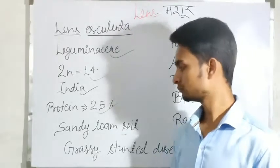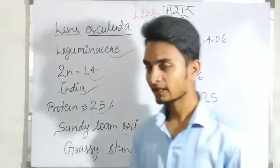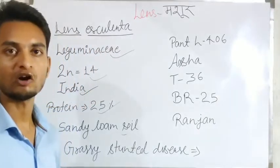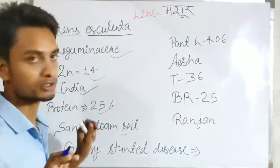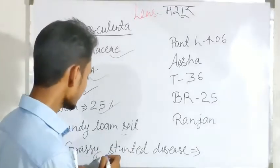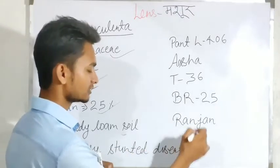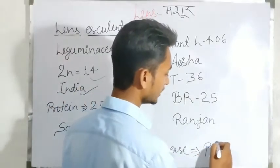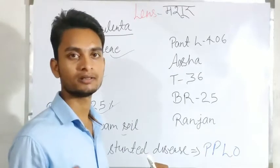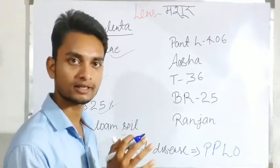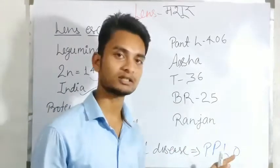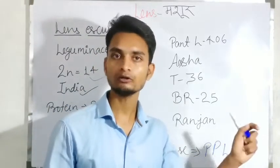The suitable soil for lens is sandy loam soil — balu domat mitti. There is an important disease called Grassy Stunt Disease. This disease is caused by phytoplasma, also called mycoplasma or MLO (Mycoplasma-Like Organism). All three terms refer to the same organism.